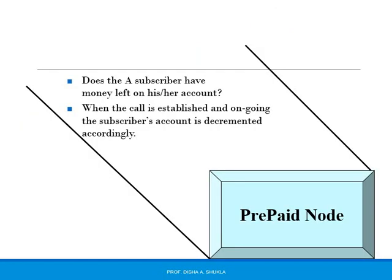Because subscriber A has a prepaid number, the call will be forwarded to the prepaid node. The prepaid node checks whether subscriber A has money left in his or her account. If you are using a prepaid service, it is necessary that you have some amount in your account. When the call is established and ongoing, the subscriber's account is decremented accordingly. So the prepaid node does two things: it checks whether the calling subscriber has an amount left, and if so, it decrements the amount as the call progresses.